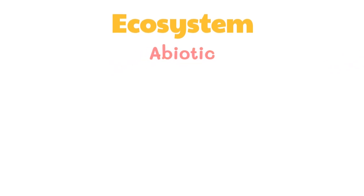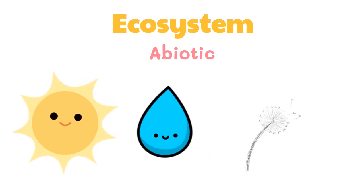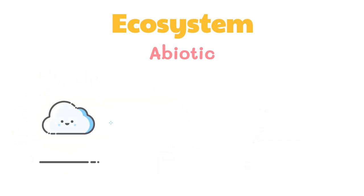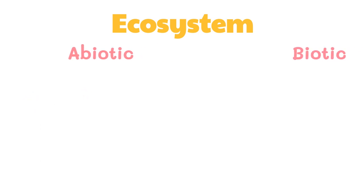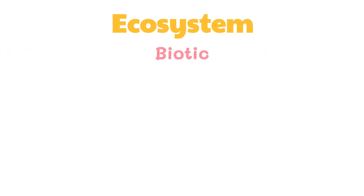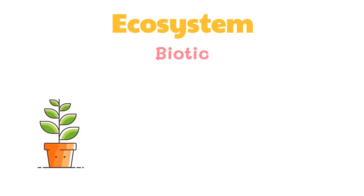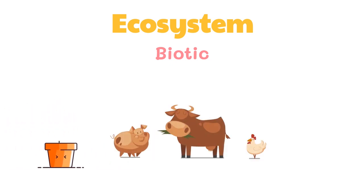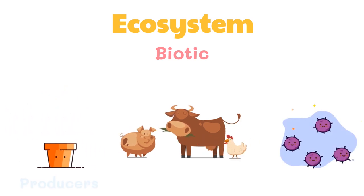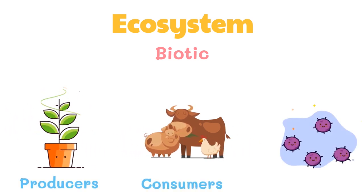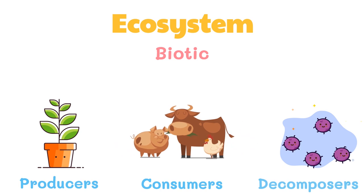Abiotic components include the sun, water, air, weather, and soil. Biotic components include various plants, animals, and bacteria that act as producers, consumers, or decomposers.